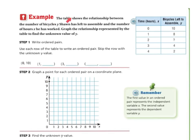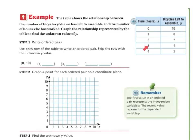Let's do another example. The table shows the relationship between the number of bicycles, Y, Sean has left to assemble, and the number of hours, X. Graph the relationship represented by the table to find the unknown value of Y. If we have 0 hours, 10. 1 hour, 8. 2 hours, we don't know. 3 hours was 4. And in 4 hours, we only had 2 left. So with no time remaining we had 10—that's how many we started with. After an hour we only had 8 left. After 2 hours, an unknown value we'll have to figure out. After 3 hours we had 4 left, and after 4 hours we only had 2 left.